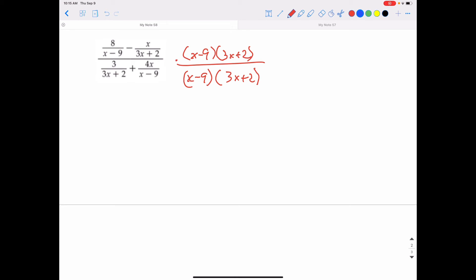So, when you multiply 8 over x minus 9 times x minus 9, 3x plus 2, the x minus 9s are going to cancel. So, I just have to take 8 times the 3x plus 2, and 8, if I go ahead and distribute that, times 3x plus 2, is going to be 24x plus 16.